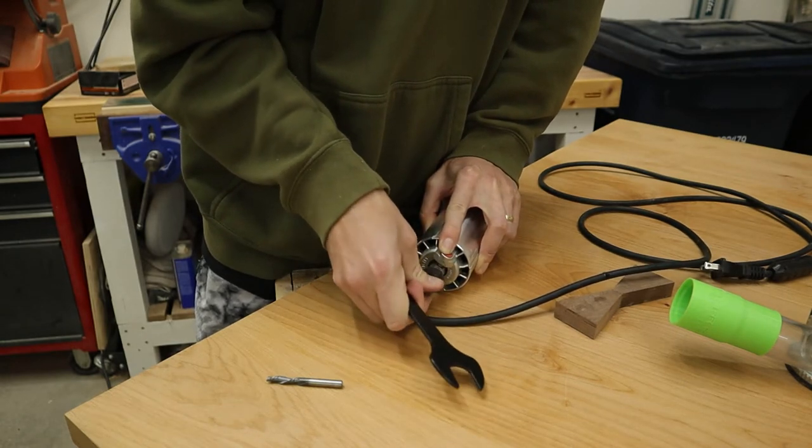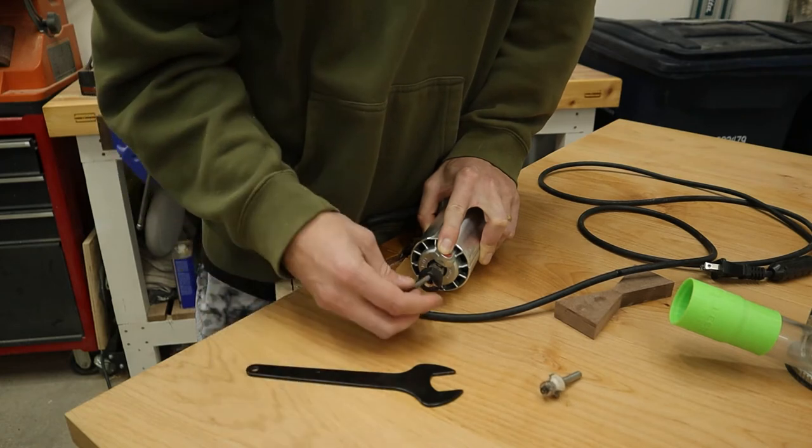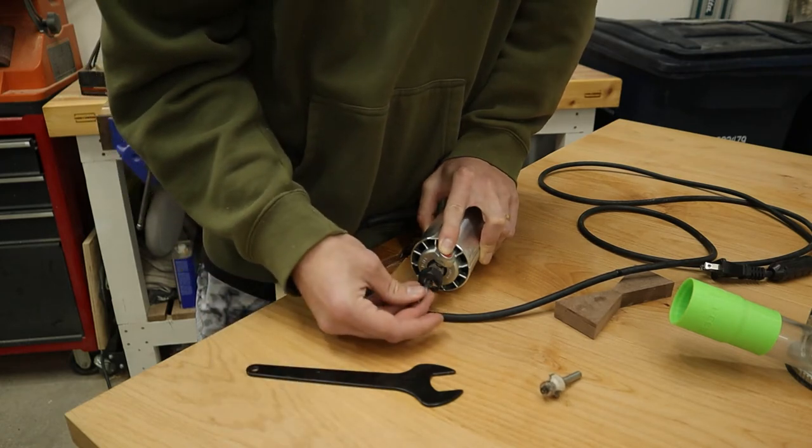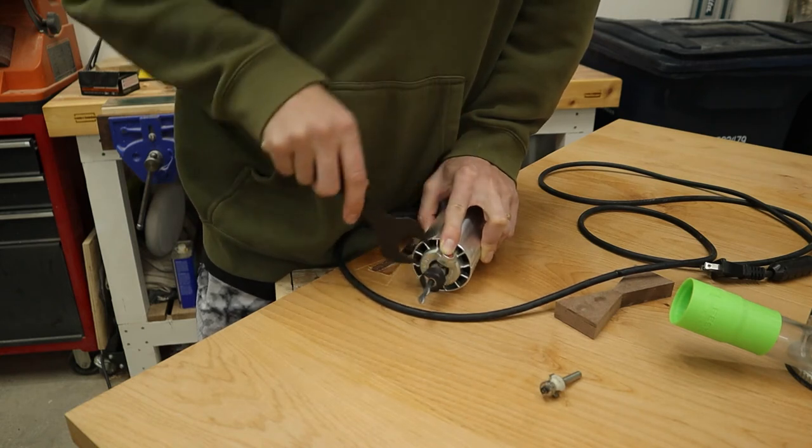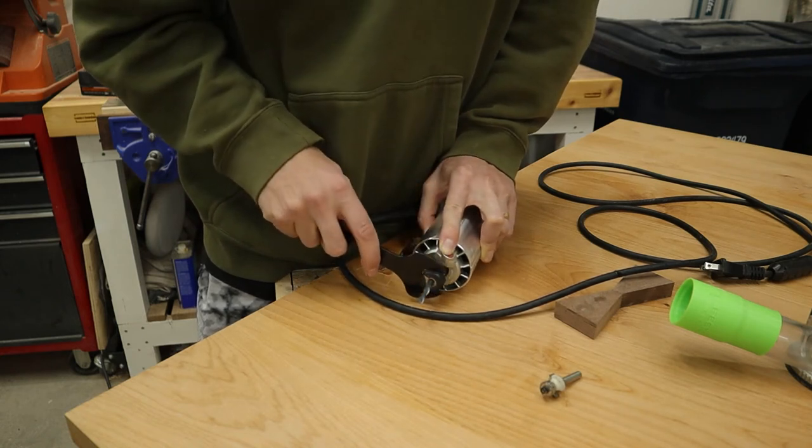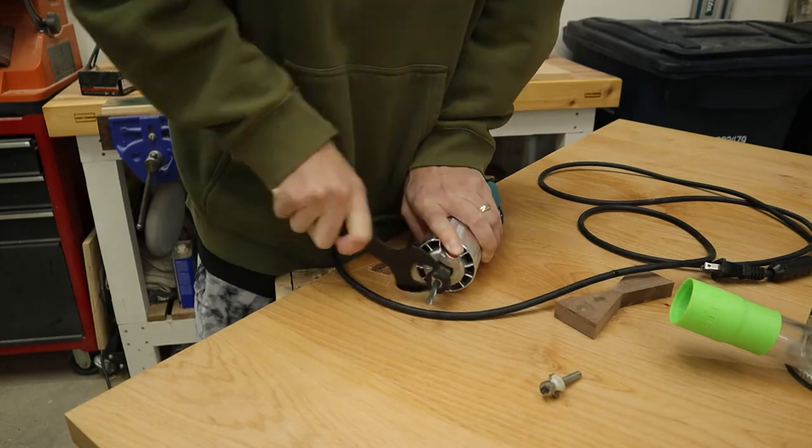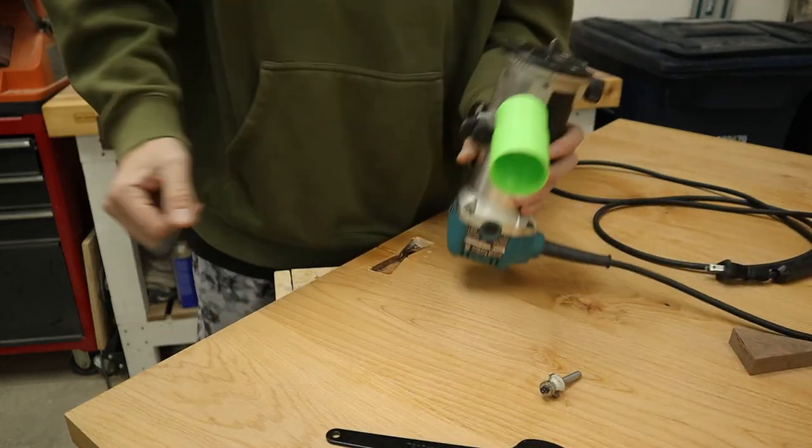When you install your router bit, make sure to clean out all of the sawdust out of the collet. And you want to tighten it down a lot because otherwise it'll slip and the cut will get deeper as you go. And I am speaking from experience. This is not fun.